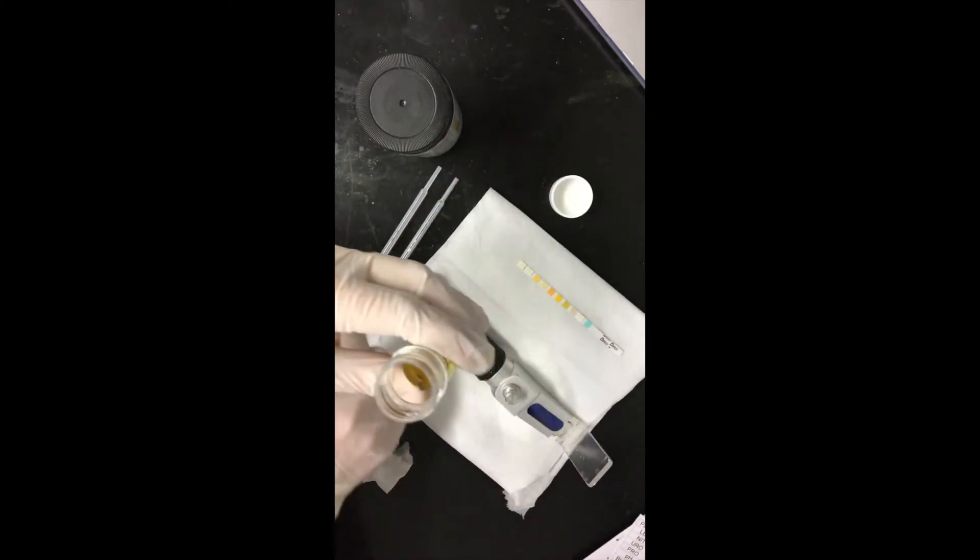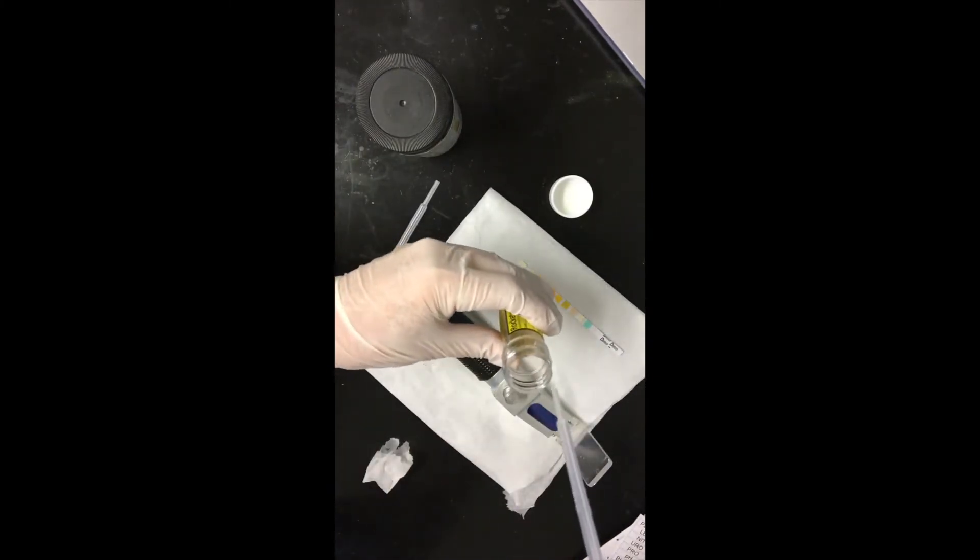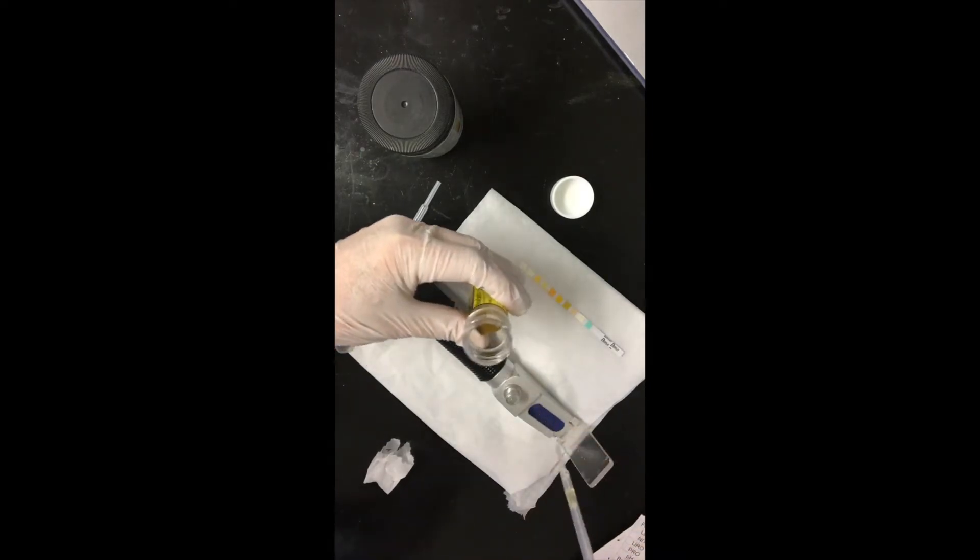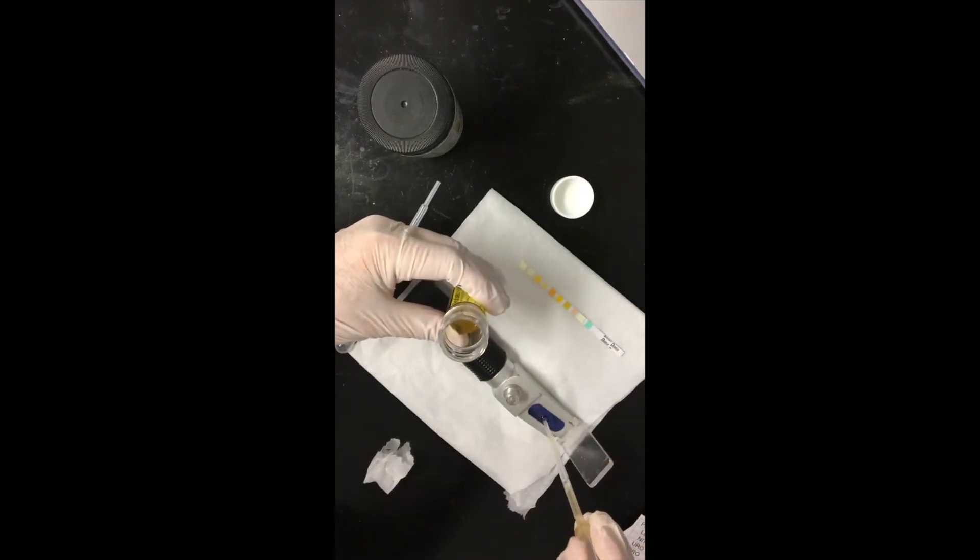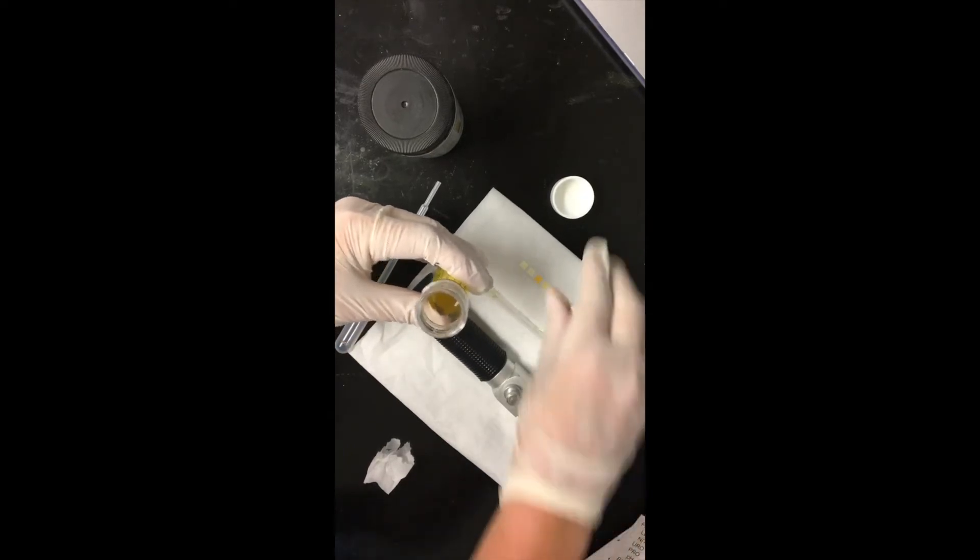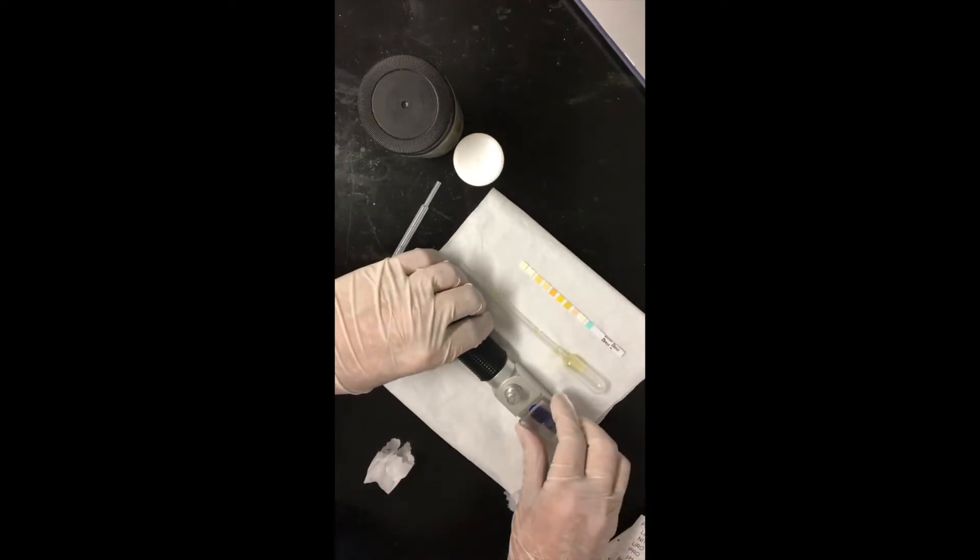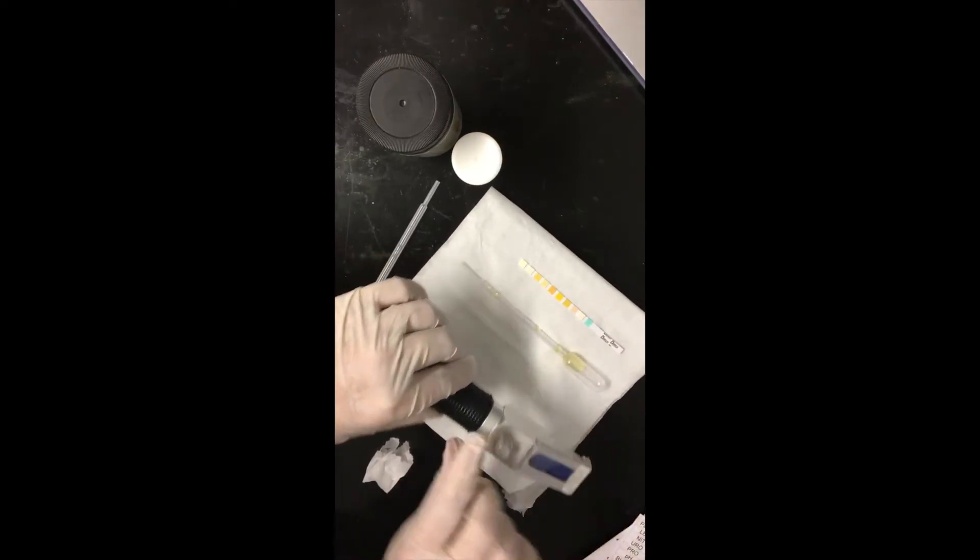Then use your pipette to take a sample and then add this to the refractometer screen. There is a well at the top of the protective screen, so if you close the refractometer, you can put your urine in there and this will disperse it evenly on the screen.